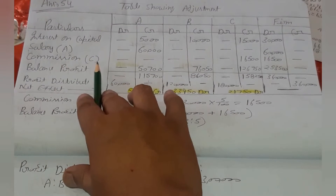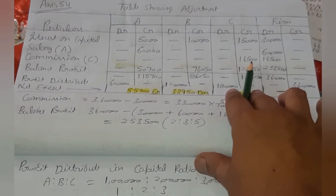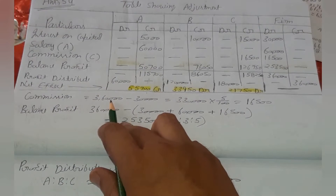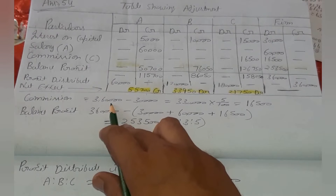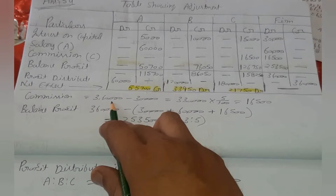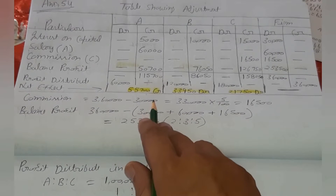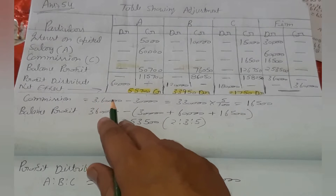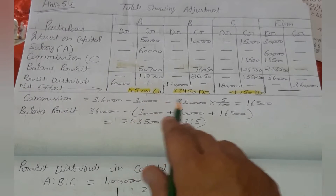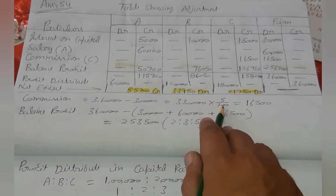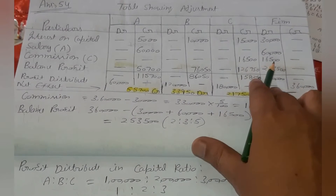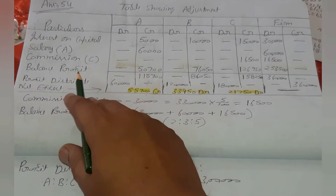अब ध्यान देंगे C के commission पर। C का commission 16,500 कैसे आया — total profit 3,60,000 है और C का commission 5% है profit after charging interest on capital, लेकिन before charging salary payable to A. तो 3,60,000 में से 30,000 minus करने के बाद बचता है 3,30,000, उसका 5% = 16,500। इस तरीके से C का commission आया और commission firm के लिए debit है।